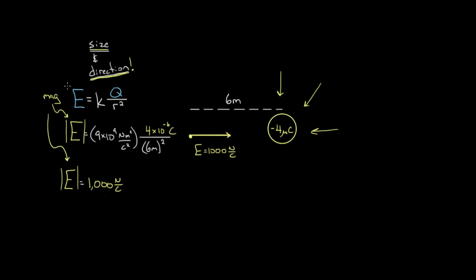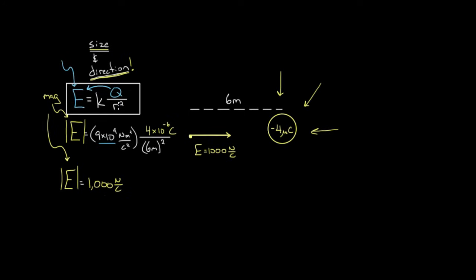To recap: the formula for the electric field created by a charge Q is that the magnitude of the electric field equals K, the electric constant, times the charge creating the field, divided by the distance from the center of that charge to the point where you want to find the field, squared.